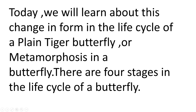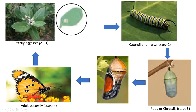Metamorphosis in a butterfly — there are four stages in the life cycle of a butterfly. Stage 1: Eggs. A female Plain Tiger butterfly lays eggs on the leaves of the milk weed plant. Can you see this leaf and the egg? After six to eight days, a larva emerges and it enters Stage 2. The larva is also called a caterpillar.